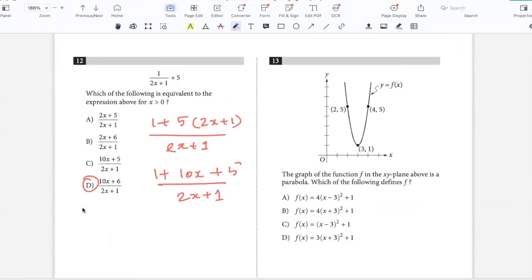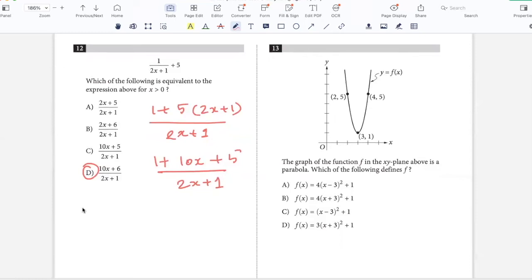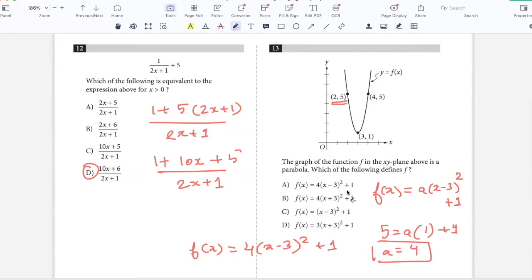The graph of the function F in the XY plane is a parabola. Which of the following defines the function? The vertex is 3, 1 and the options are in the vertex form. So I can say F of X equals a times X minus 3 whole squared plus 1. To find a, I can use the point 2, 5. So 5 equals a times 2 minus 3 whole squared plus 1, so a is 4. F of X becomes 4 times X minus 3 whole squared plus 1. Option A.